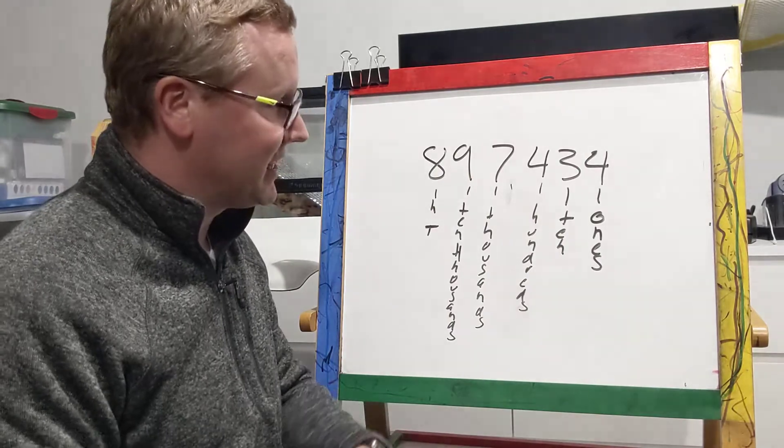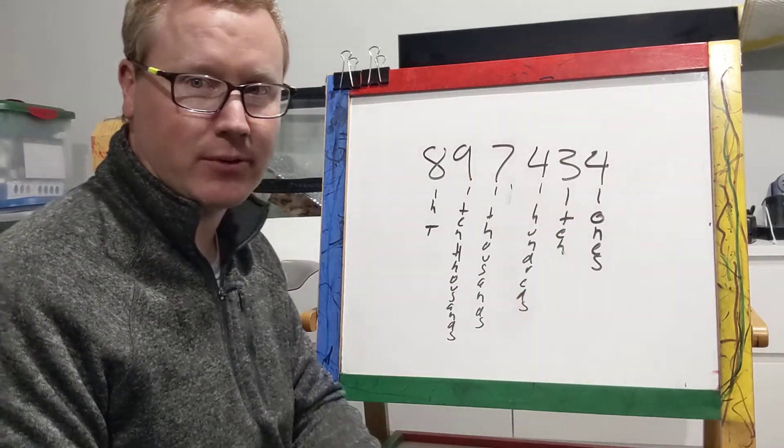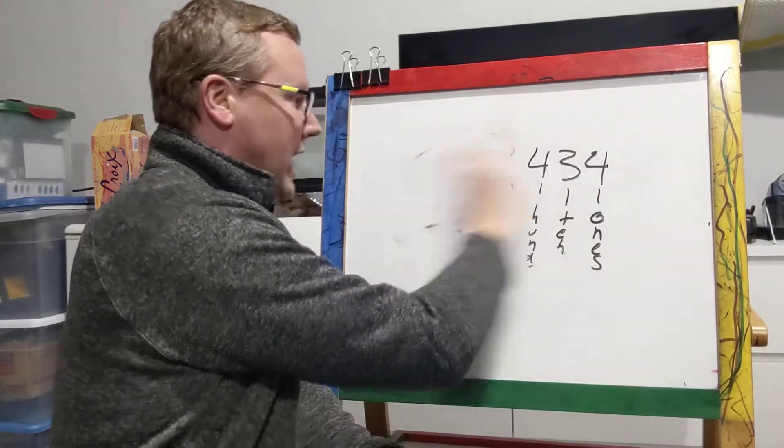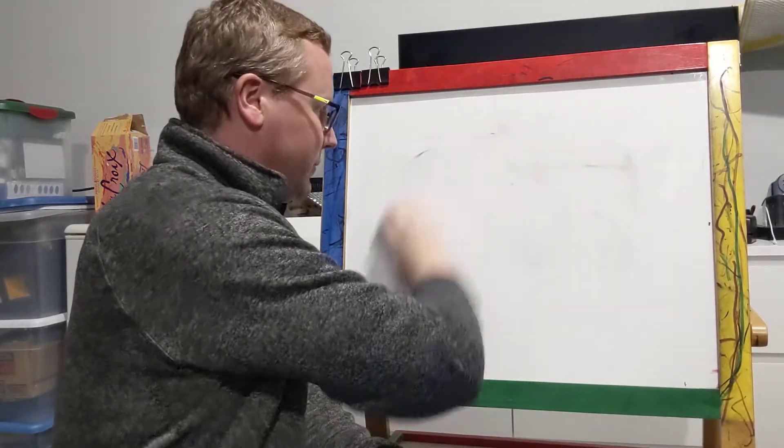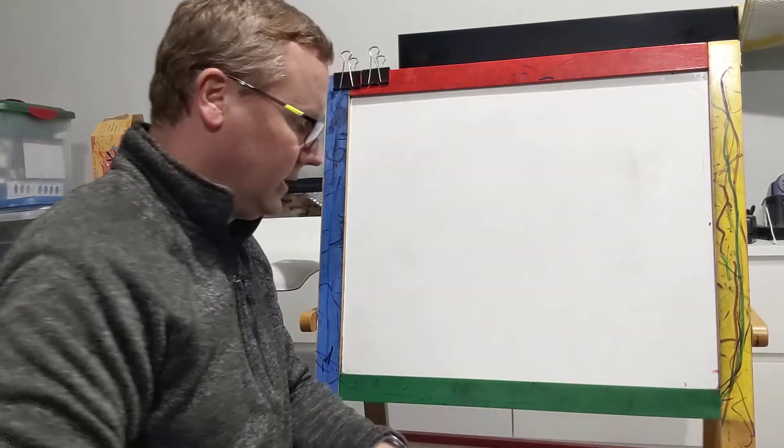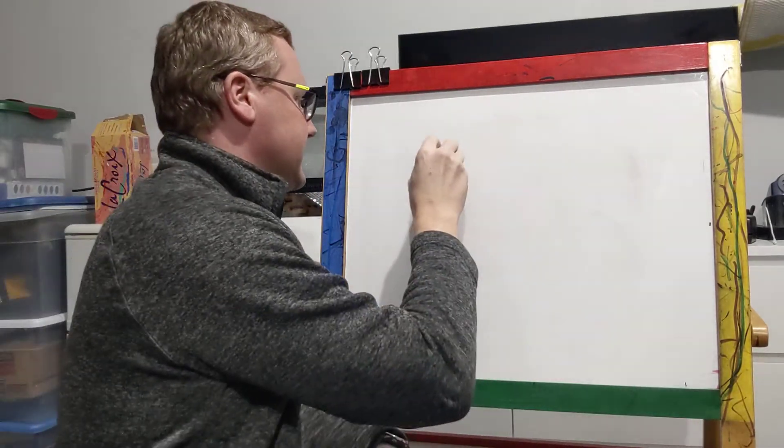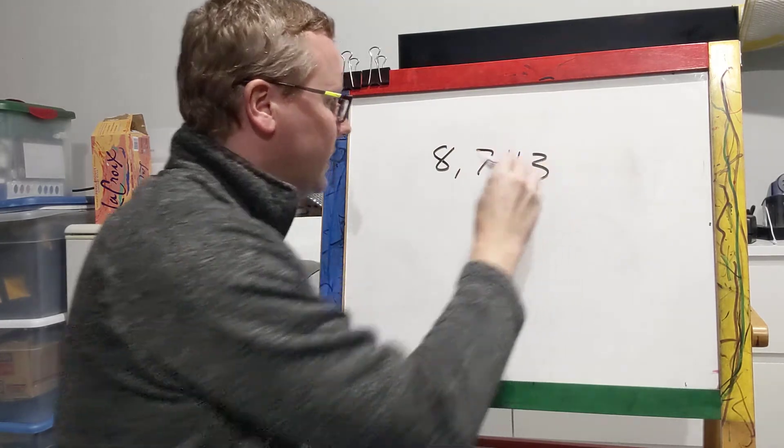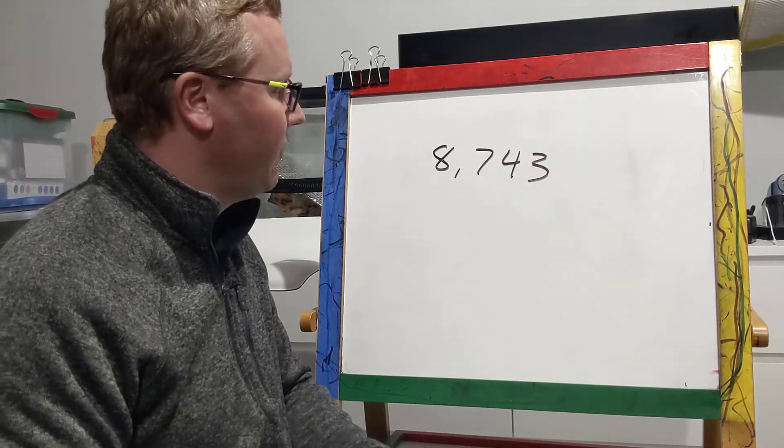If I said round to the nearest tens, you need to know it's the three. So let's pretend we have a new problem here. Let's say we have a number that looks like this: 8,743.